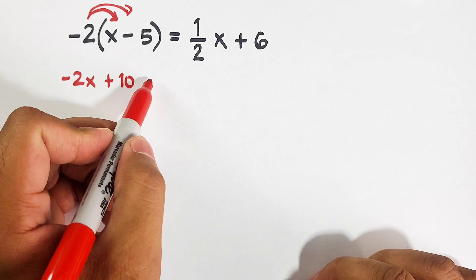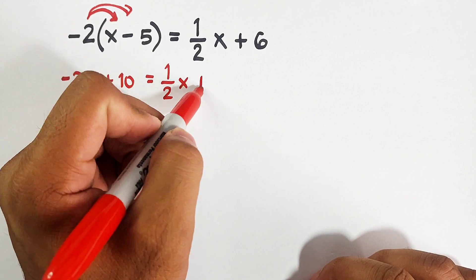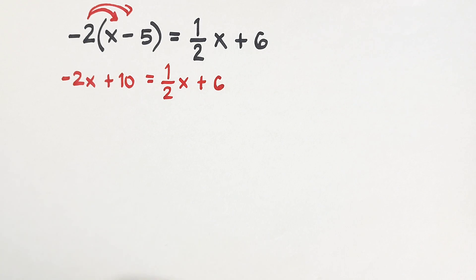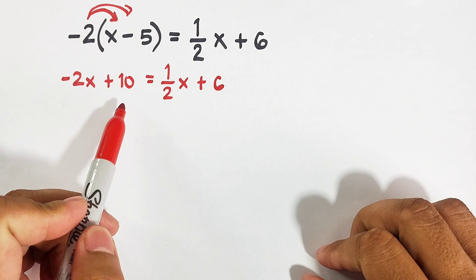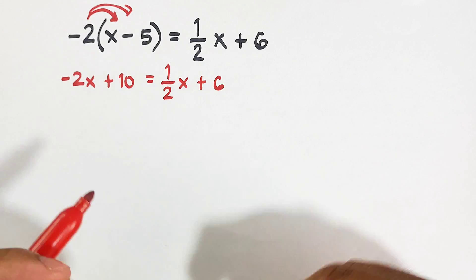Then we will copy the other side of the equation, which is 1.5x plus 6. Now as you can see, what we have now is the equation negative 2x plus 10 equals 1.5x plus 6. So what is the next step here?